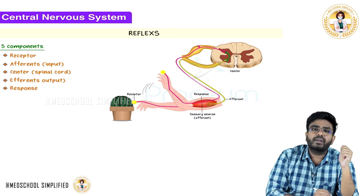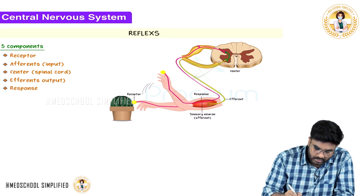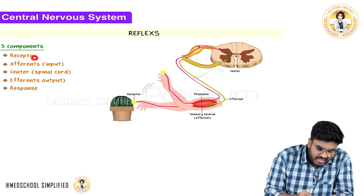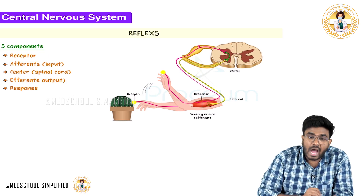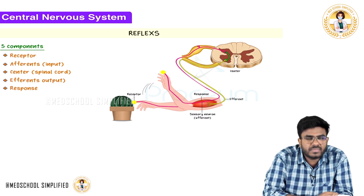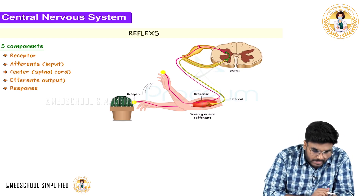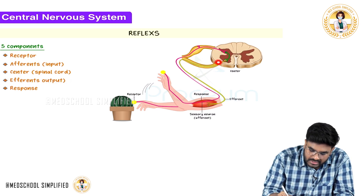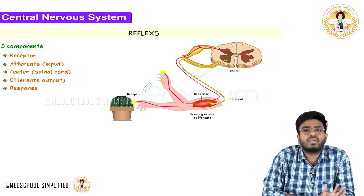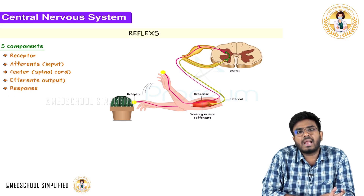Now, what are the important components of the reflex? There are five important components. First, there is a receptor — the stimulus has to stimulate the receptor. When a person touches a sharp object, pain receptors are activated. From the receptor, something must take the information to the central nervous system — that is the afferent. The afferents are the inputs; the first order neuron takes the information to the spinal cord. Decision-making happens in the center, which is the spinal cord. Then there are efferents coming out from the spinal cord, causing the patient to withdraw their hand — that is the response. So the five components are: receptor, afferents, center, efferents, and response.